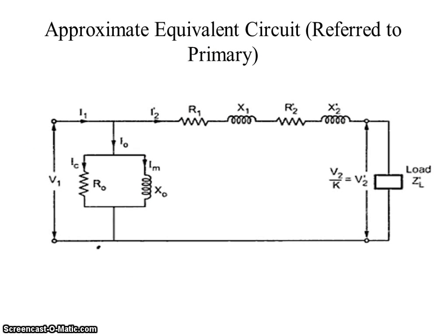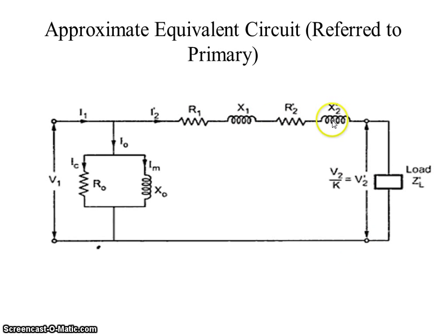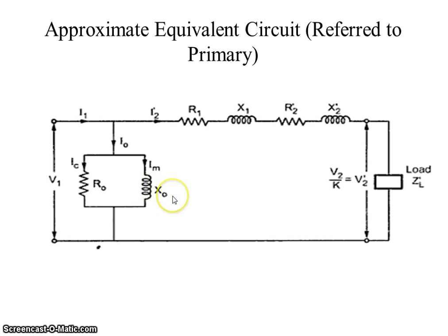This is the approximate equivalent circuit referred to primary side, in which R1 and R2 dash are combined together, X1 and X2 dash are combined together, V2 dash becomes V2/A (or V2/K), and R0 and Xm remain as in the previous figure.